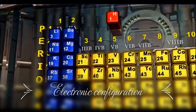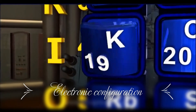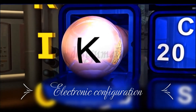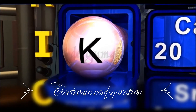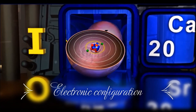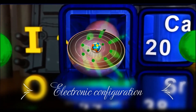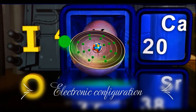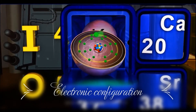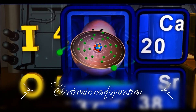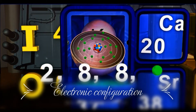For example, the atomic number of potassium is 19. Therefore, there are 19 electrons revolving around the nucleus in the potassium atom. Out of these, two electrons enter the first orbit, eight in the second orbit, the other eight enter the third orbit, and the remaining one electron, instead of entering the third orbit, enters the fourth orbit. Hence, the electronic configuration of potassium is 2, 8, 8, 1.